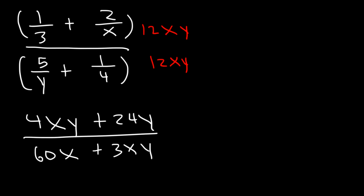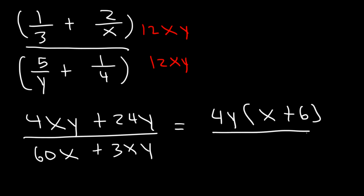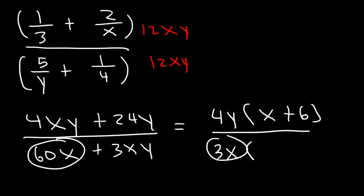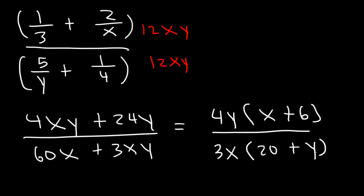Now let's factor. On top, we can take out a 4y, which will leave us with x plus 6. On the bottom, we can take out a 3x. 60x divided by 3x is 20, and 3xy divided by 3x is just y. So the final answer is 4y(x + 6) over 3x(20 + y).